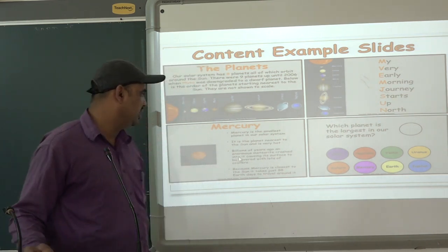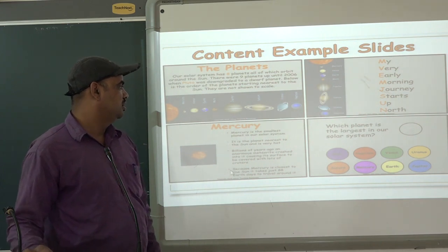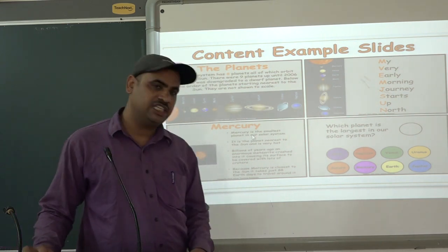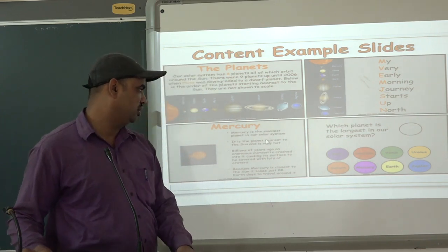Mercury is the smallest planet. One fact is given for Mercury: it is the nearest planet to the Sun and is also the smallest planet in our solar system.